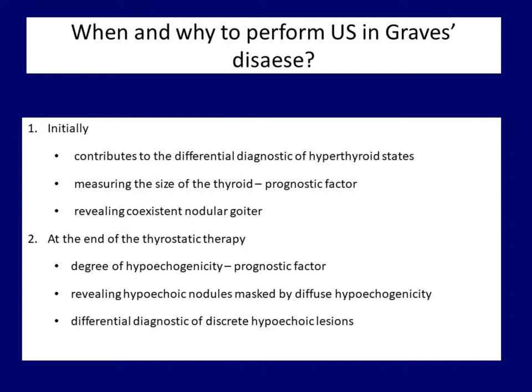A repeat ultrasound can be justified later in the course of the disease, either in six months or before the planned completion of thyrostatic therapy. We have two reasons for a repeat ultrasound. The first is that ultrasound may contribute to the decision whether to stop or continue medical treatment. A permanent hypoechogenicity consistent with high TSAB levels is an unfavorable prognostic signal. The other reason is the recognition of a hypoechoic nodule which was masked by diffuse hypoechogenicity in the first study.